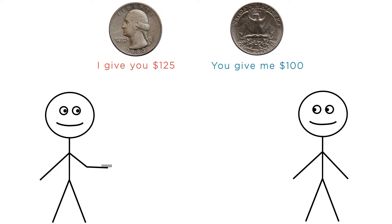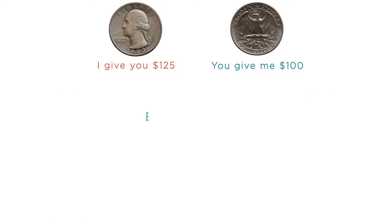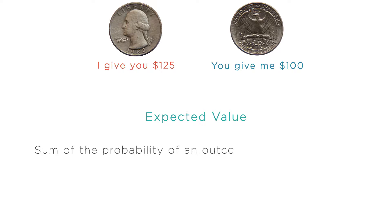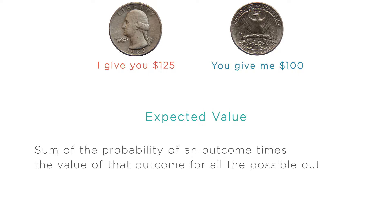One way you might think about this is to consider whether this is a good deal for you financially or not. To determine this, we can look at the expected value of the bet, or how much money you'd make on average if you made this bet over and over again. The expected value is computed by adding together the probability of an outcome times the value of that outcome for all the possible outcomes.